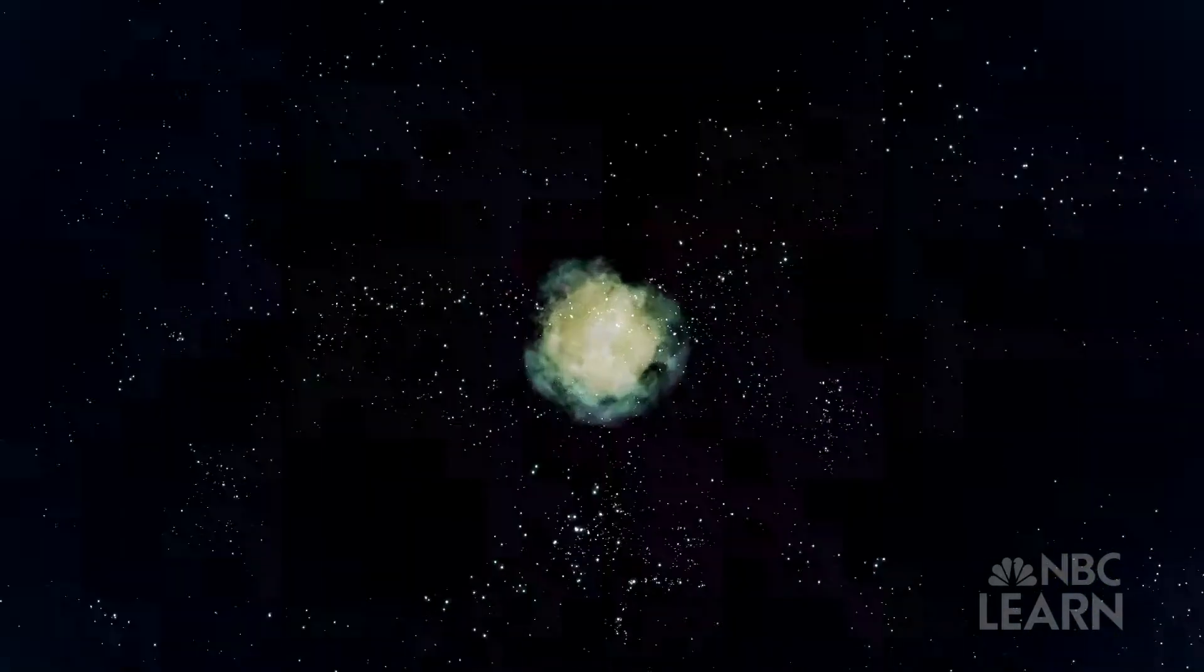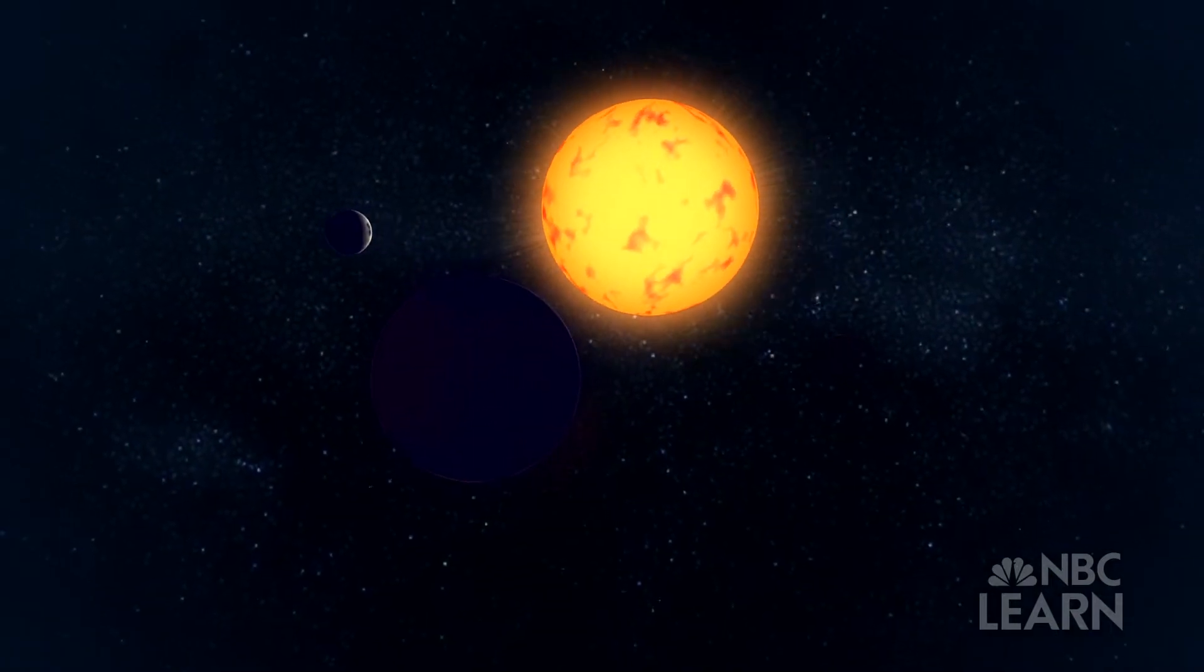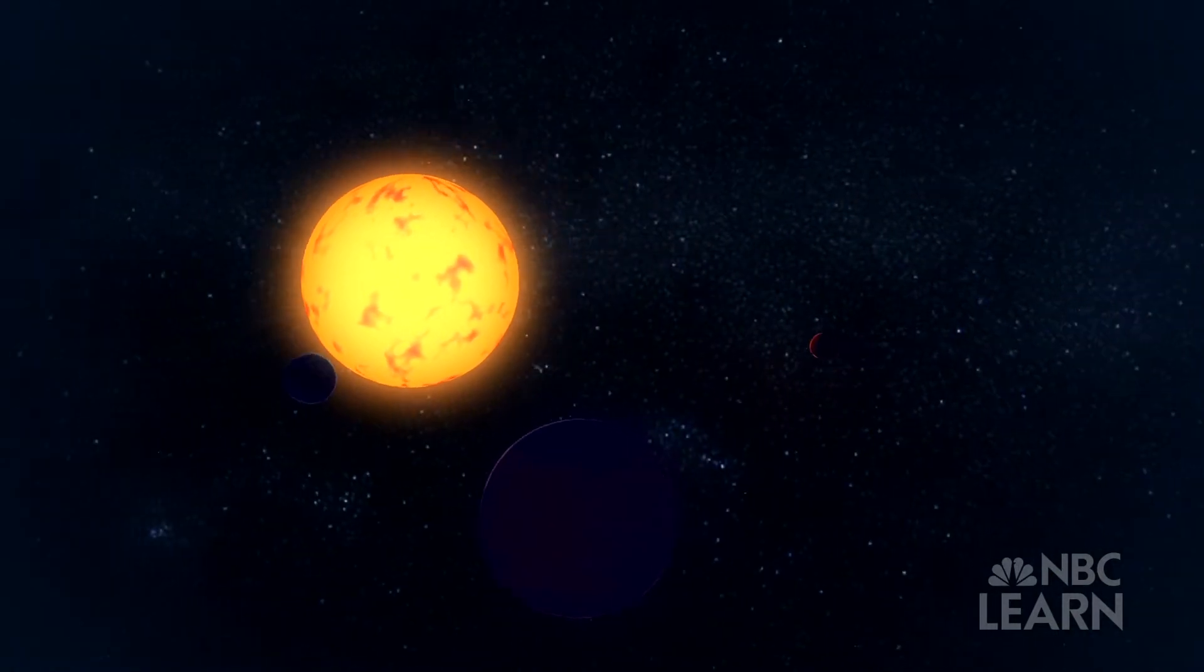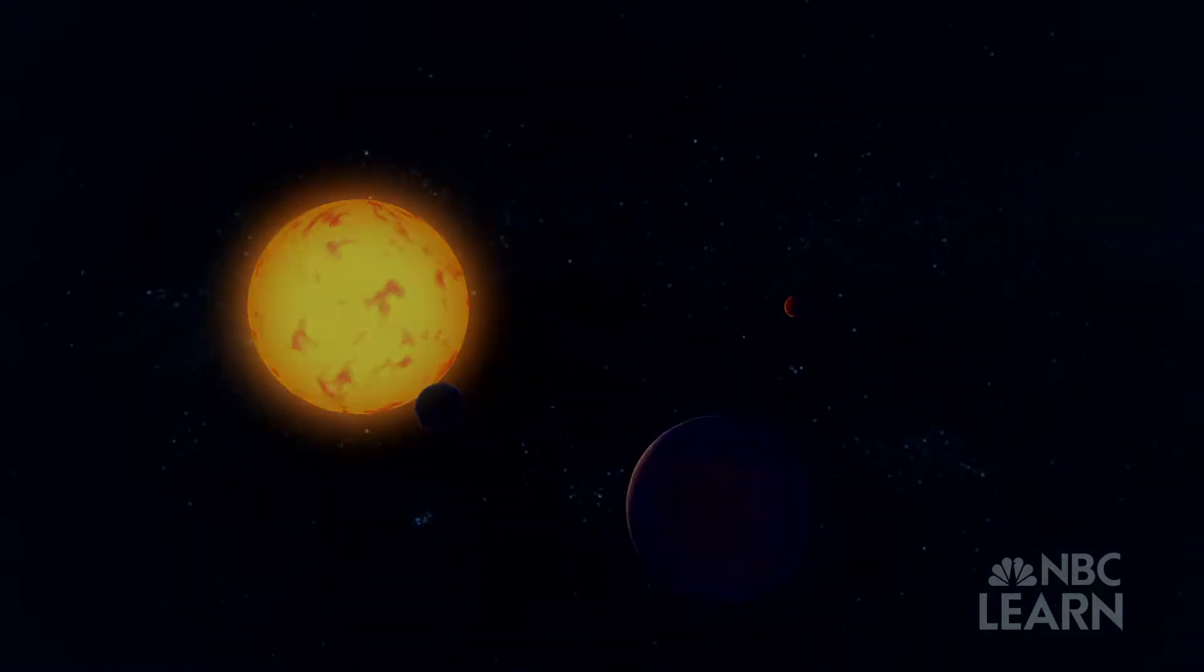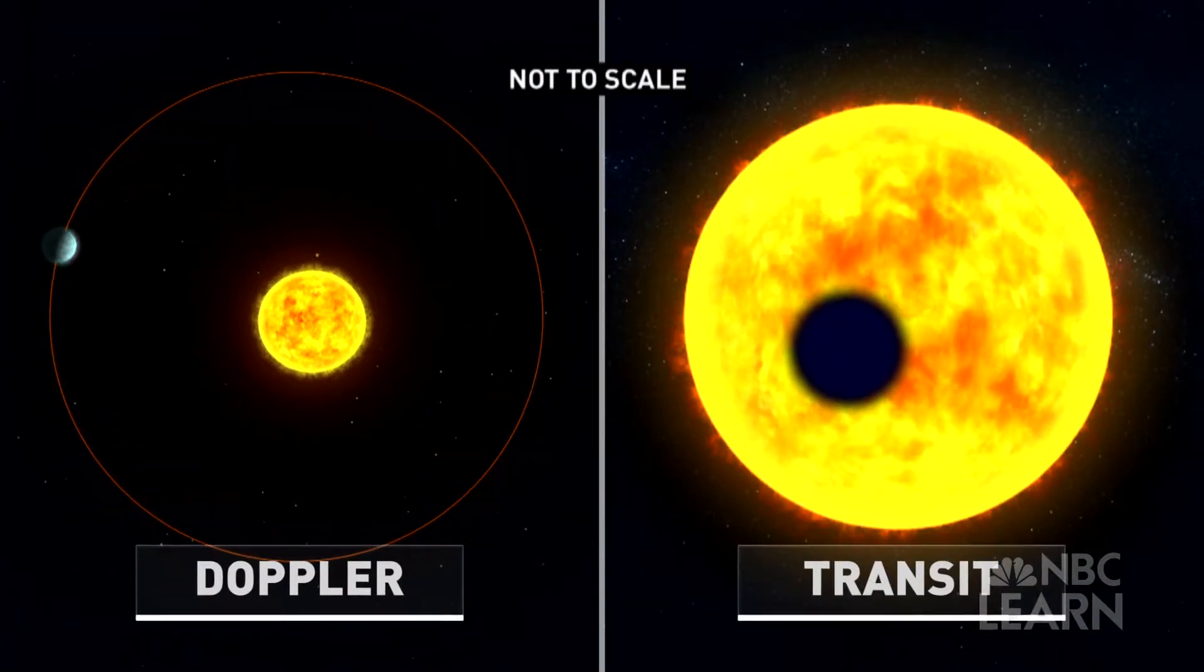So those little dots of light in the sky might have planets around them. An extrasolar planet would be a planet that orbits one of those little dots of light. To detect these distant planets, astronomers primarily use two methods: Doppler and transit.